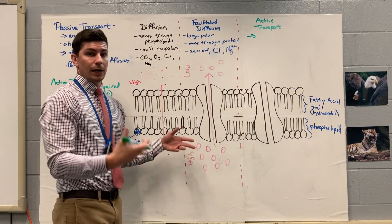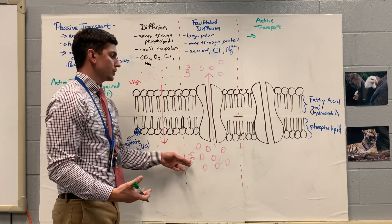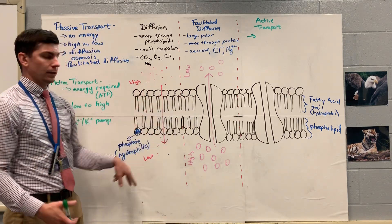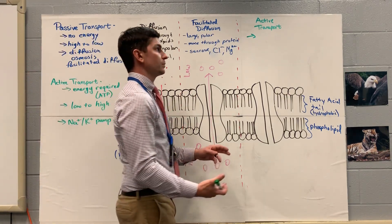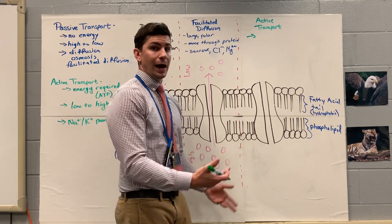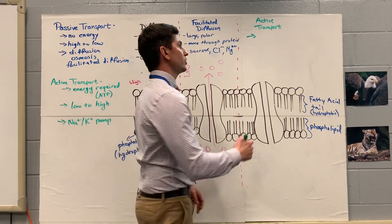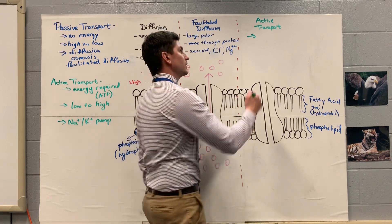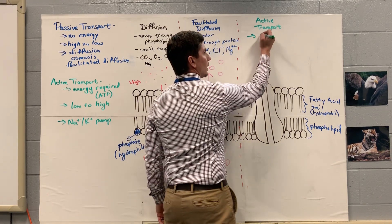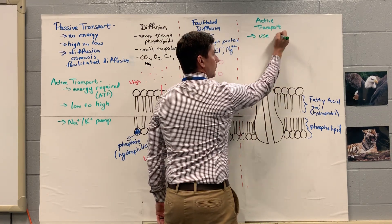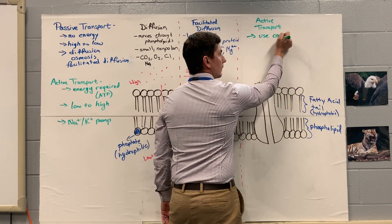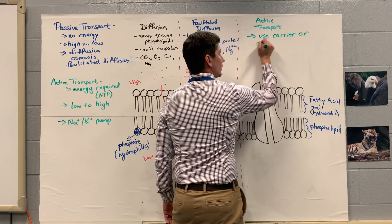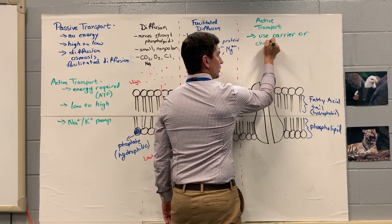The other ones went with our concentration gradient — went from high to low each time, high to low. The difference here is we're going to be going from low to high concentration. So we're still going to need a protein. Most of the time it's going to be something called a carrier protein, but we can also use, every now and again, a channel protein.